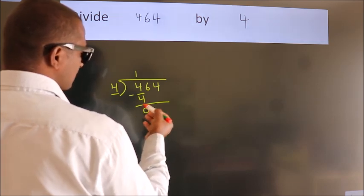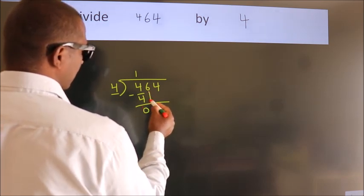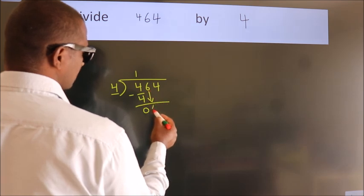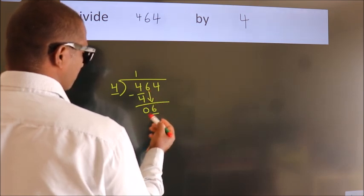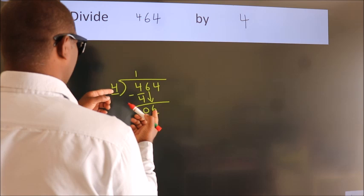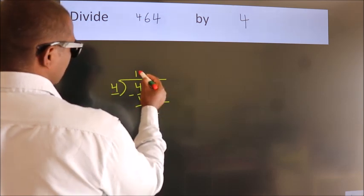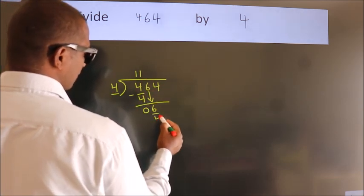After this, bring down the beside number. So 6 down. So 6. A number close to 6 in 4 table is 4 once, 4.